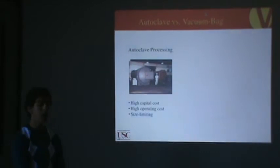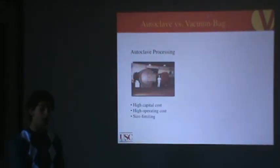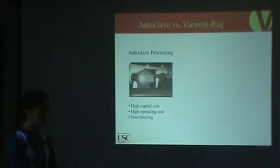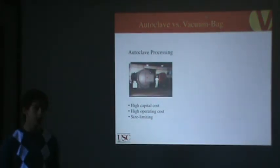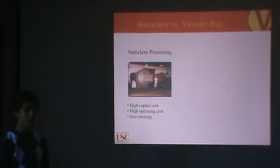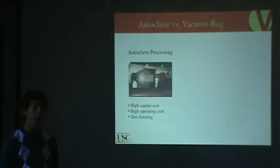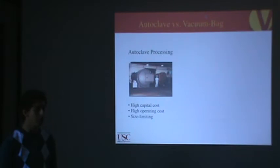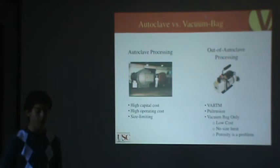Traditional carbon fiber composites are made using a large pressure vessel called an autoclave. This produces high-quality composite parts. However, there are few limitations, including a very high capital cost, high operating cost associated with the compressed nitrogen gas, and they're also size limiting. Right now, they don't make autoclaves big enough to make an entire airplane wing or an entire fuselage. So, we're studying out-of-autoclave processing. There are several different types: vacuum-assisted resin transfer molding, pultrusion, and today I'll be discussing vacuum bag-only processing.